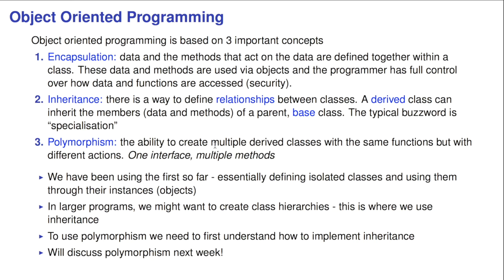And what we've really been using up to now is the first. We've defined isolated classes and used them through their instances or through their objects, which is the same thing. In larger programs, we may want to create class hierarchies. This is where we use inheritance. And to use polymorphism, we first need to understand how to implement inheritance. So that's why polymorphism will have to wait until the next time.